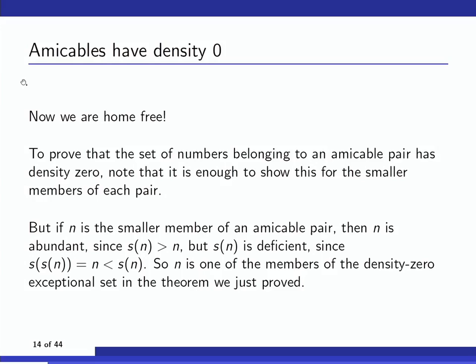Finally, Erdős finishes by noting it's enough to count the smaller members of amicable pairs. If n is the smaller member, it's abundant — applying s jumps to the larger member — but s(n) is not abundant, since applying s again gives back the smaller member, which is smaller, hence deficient. So the smaller members of amicable pairs are numbers which are abundant but where s(n) is not abundant — we just showed that set has density zero, completing the proof that amicables have density zero.